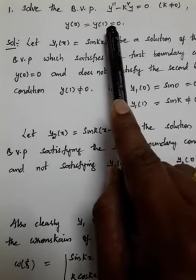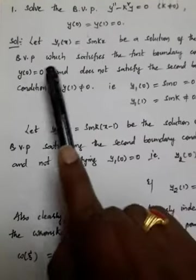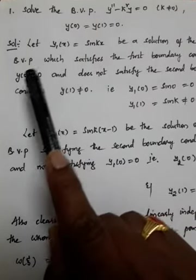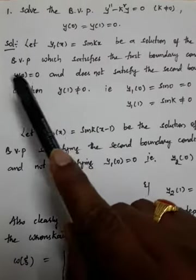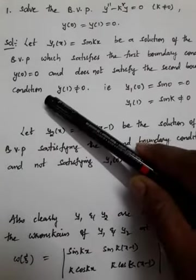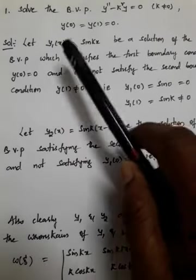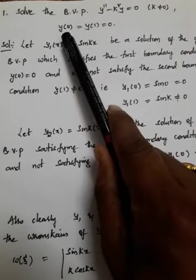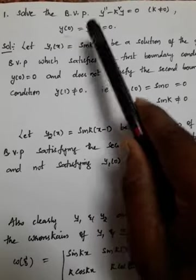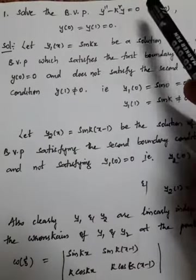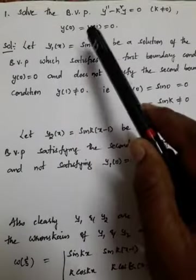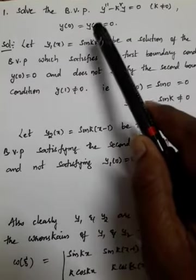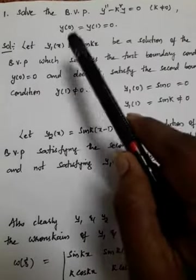This is the boundary condition which is given. According to the theory from the previous video, we have seen that we have to assume the solution in such a way that the boundary condition y(0) may be satisfied and y(1) may not be satisfied. In that way, you have to assume the solution and take it as y1(x) and y2(x).